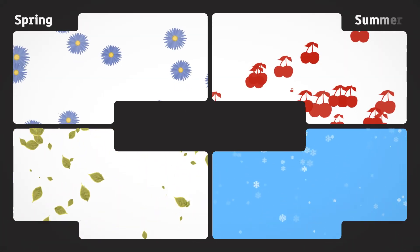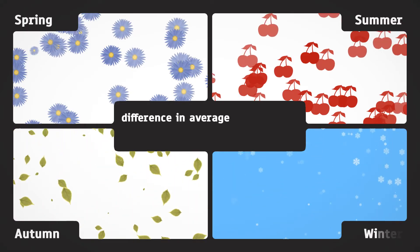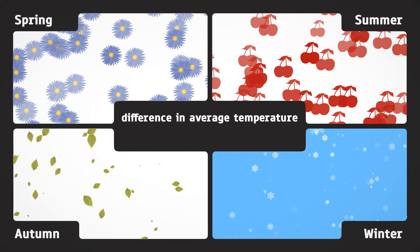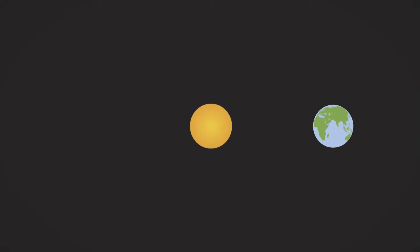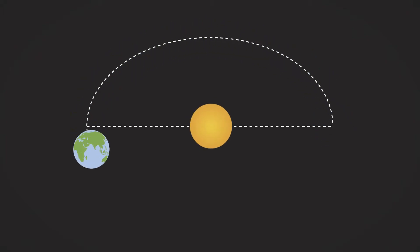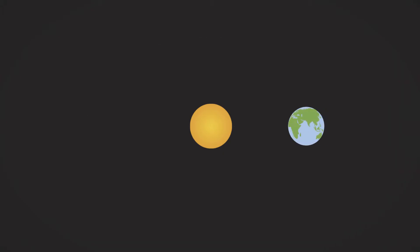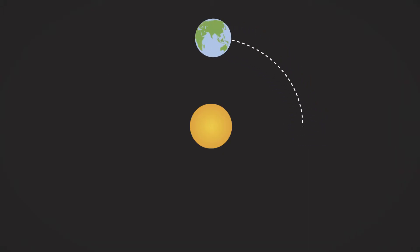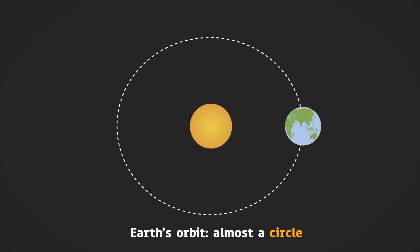Seasons are broadly characterized by the difference in average temperature and the length of day or night. Intuitively, it may seem that the varying distance of Earth from Sun causes seasons, but in fact the maximum difference of this distance is just about three percent.